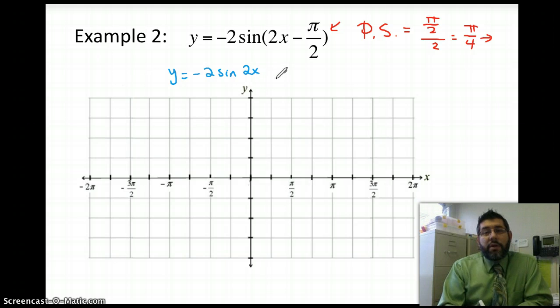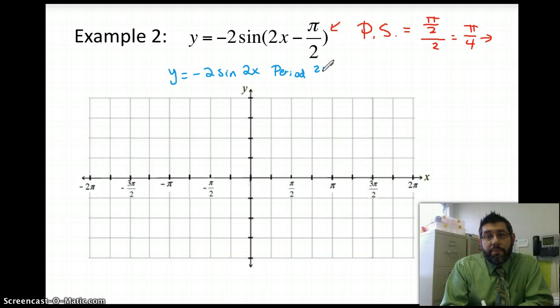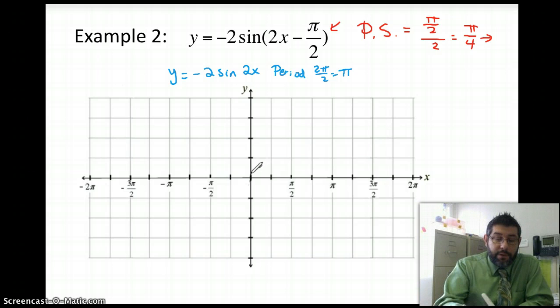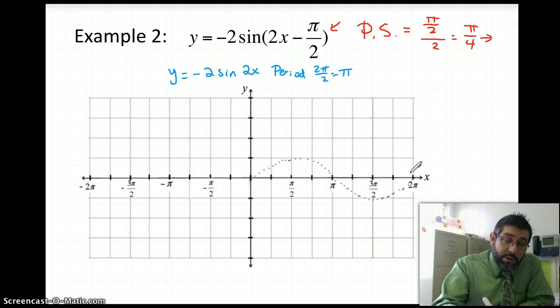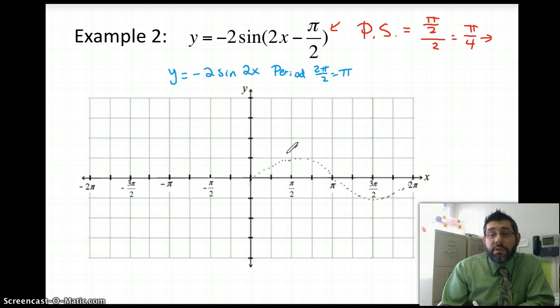So this has a change in period. The period here is 2 pi over b, 2 pi over b. So I'm going to have a period of pi. So my normal sine x graph, okay, my sine x graph is going to look like this. Let's see, it's going to go here, and then here, and down through here, and then back up. Okay, but I want to have a negative 2 sine of 2x.